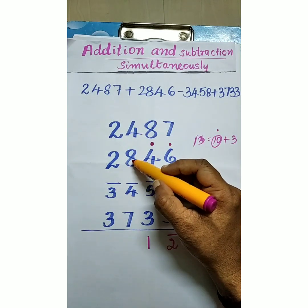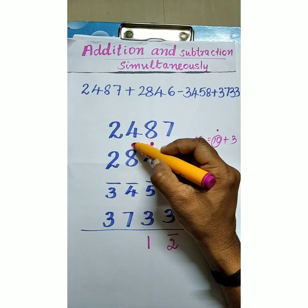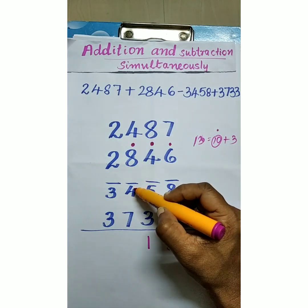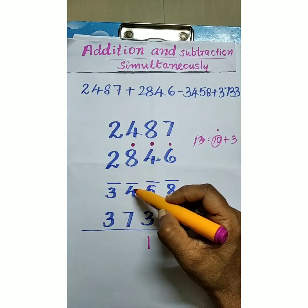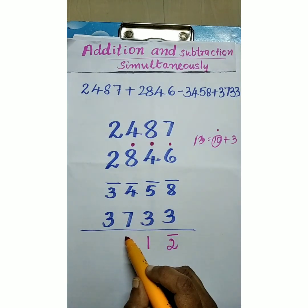1 plus 4 is 5. 5 plus 8. Again 13. That is 10 plus 3. 3 minus 4 is minus 1. Minus 1 plus 7, that is 6.